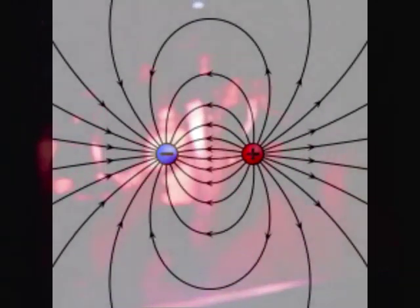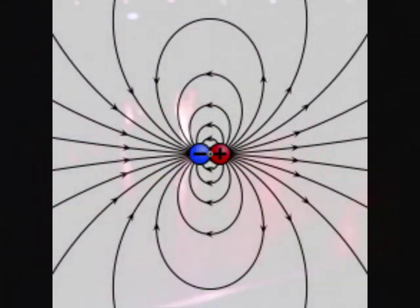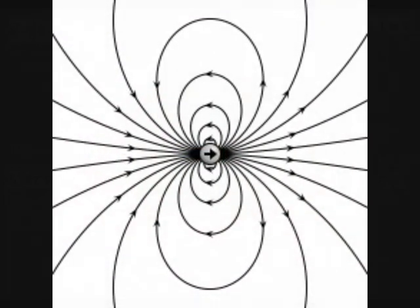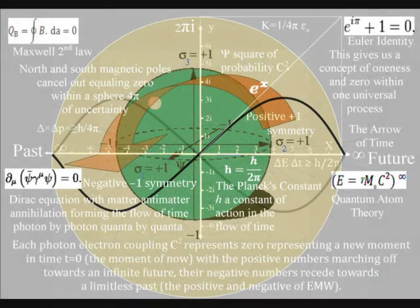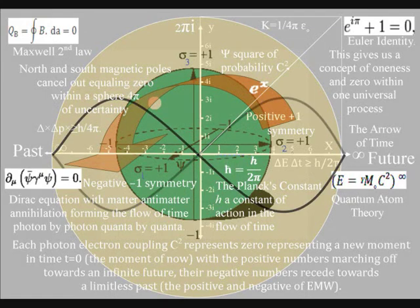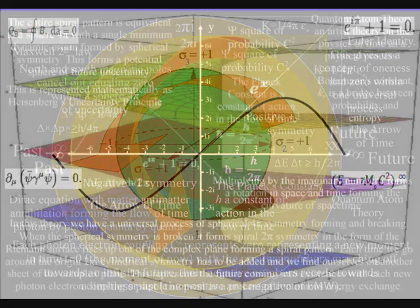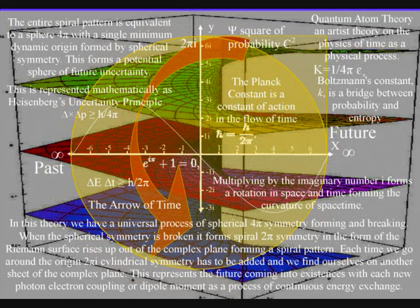Photons, like all particles with no rest mass, cannot come to rest. Therefore, the universe is never at absolute zero, and there is always the spontaneous absorption and emission of light with photon oscillations or vibrations. So far, I have explained this using mainstream physics.